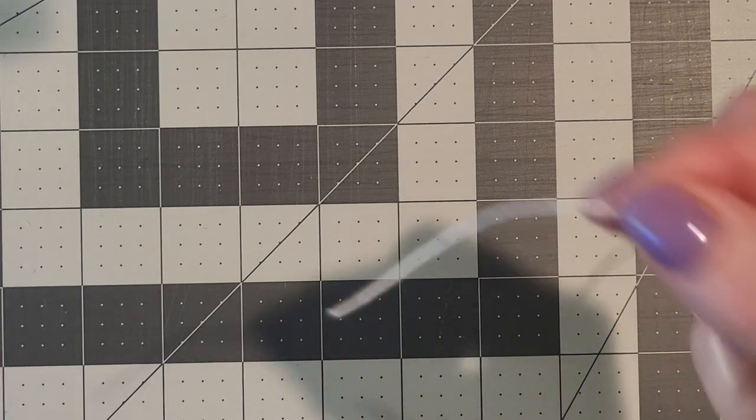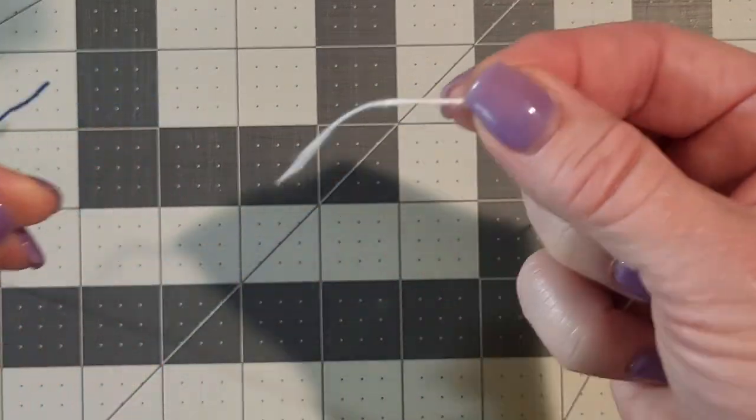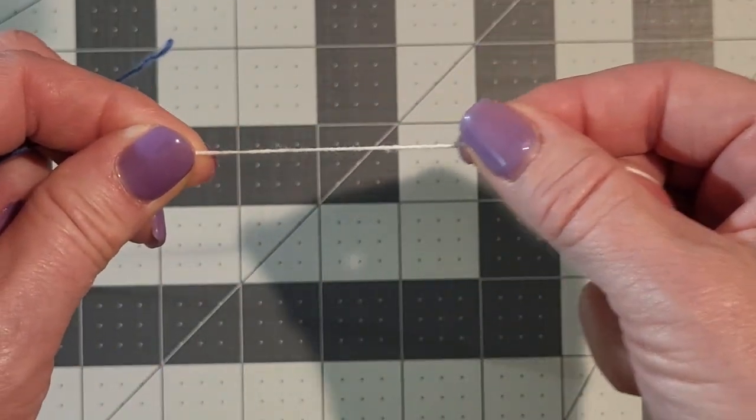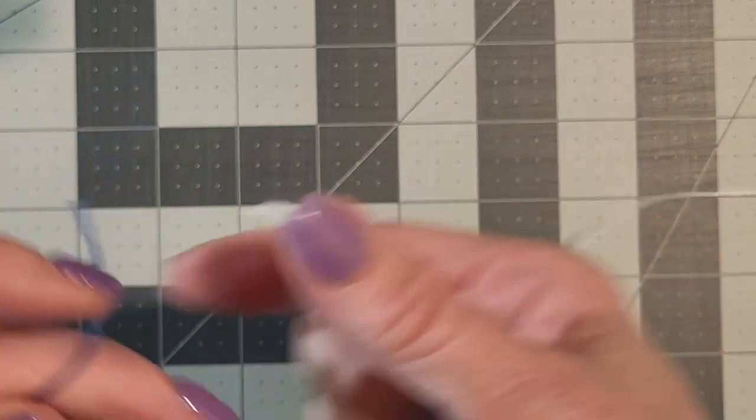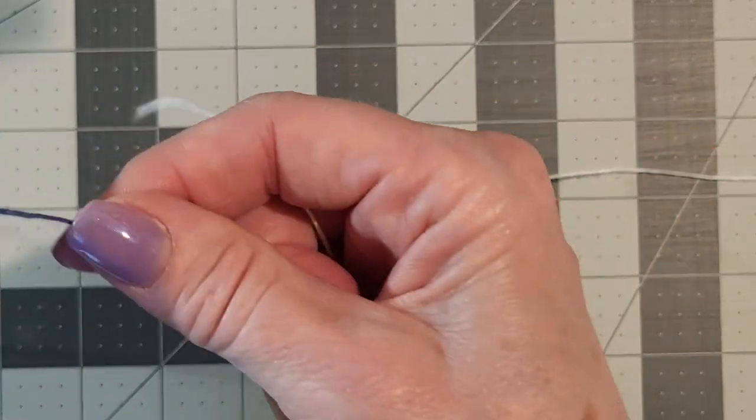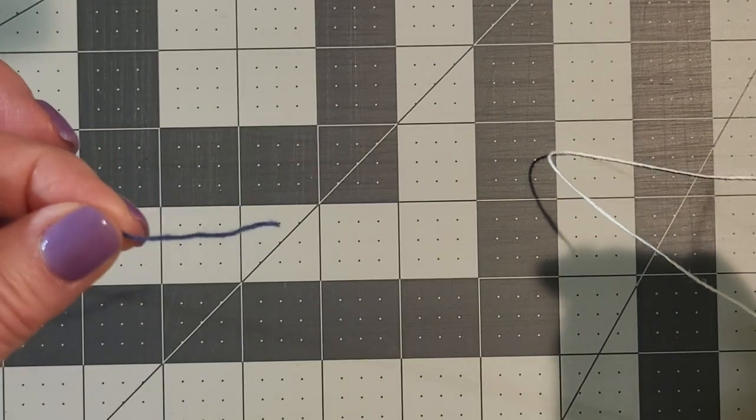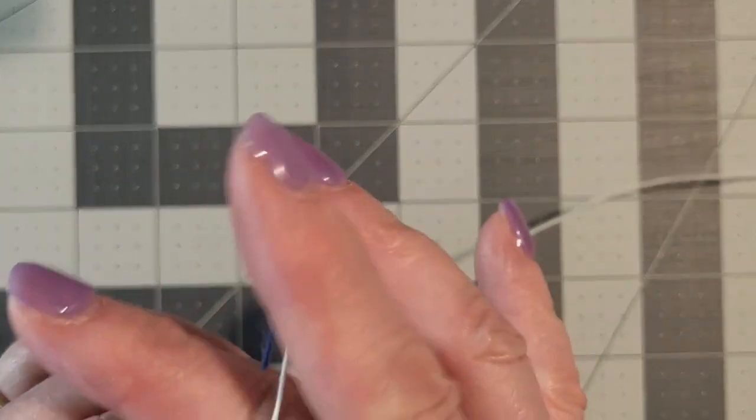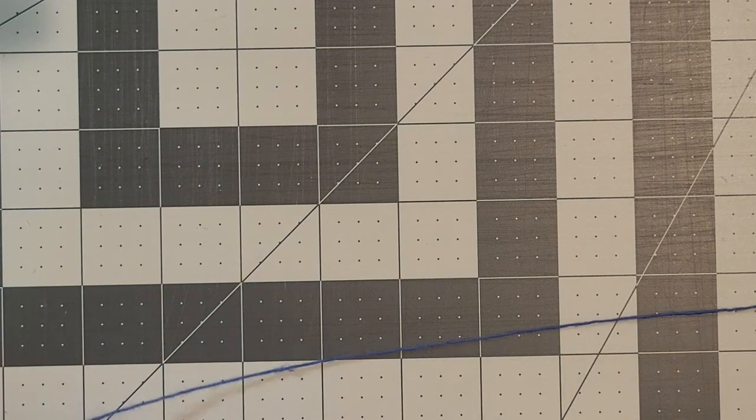So here we have an example. This will be representing our old warp. This is going to represent our new warp and I'm actually going to switch these because I'm right-handed.